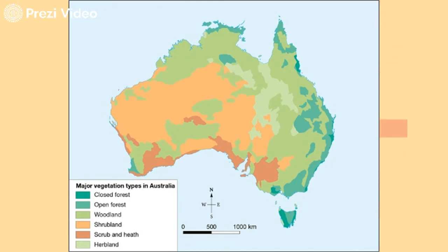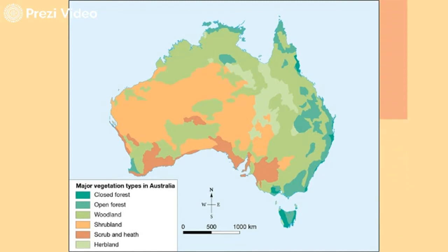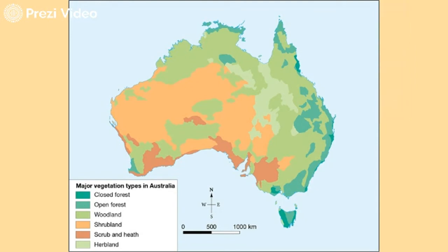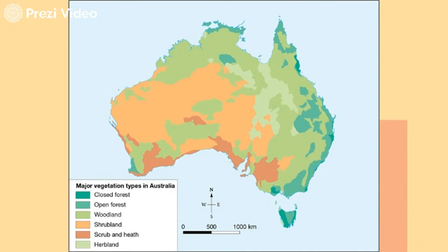The colours in the key help us to understand the distribution of vegetation. A very dark green indicates closed forest. A slightly lighter green indicates open forest. A more grass green indicates woodland. Orange indicates shrubland. Brown indicates scrub and heath — a dark, sparse area with very little plant life. Light green indicates herbland. Next, we examine the key.